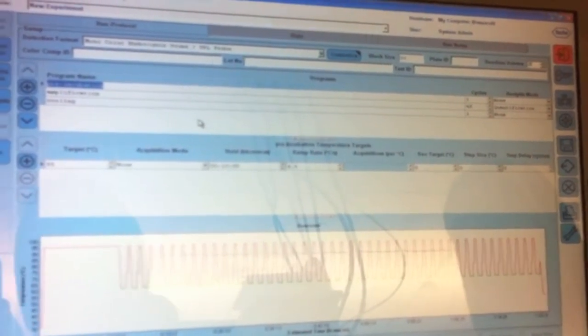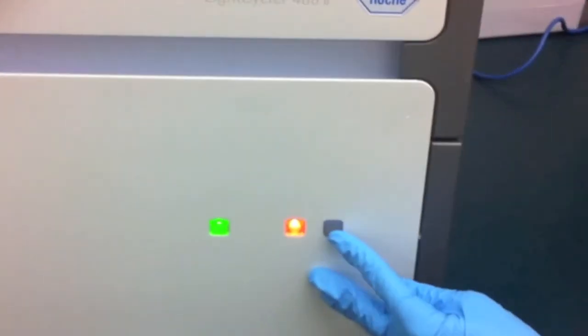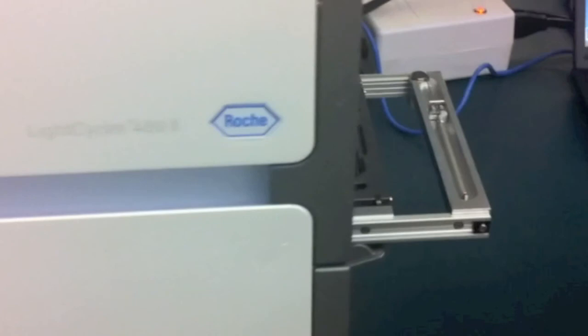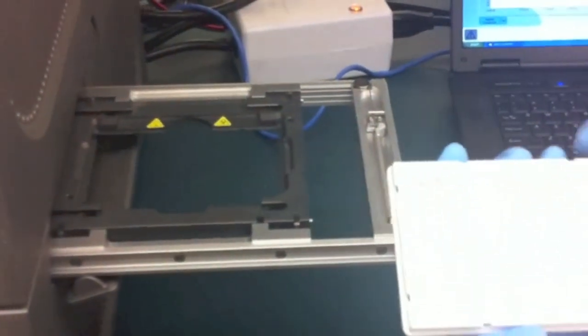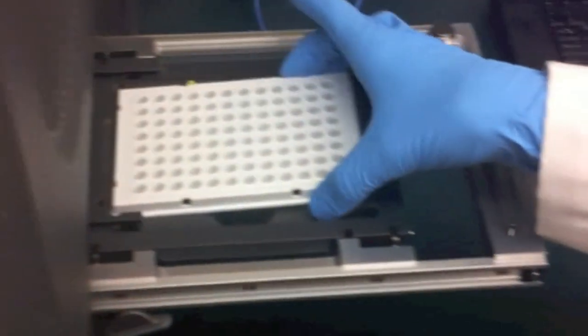Then, go ahead and load your plate into the machine by pushing the button on the side of the machine. Place your plate in the correct way by having the cut corner in the lower right-hand side.